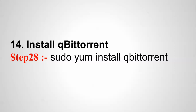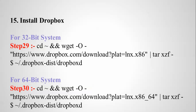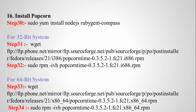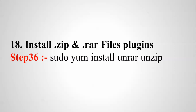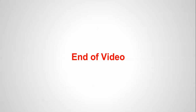To install qBittorrent, type 'qbittorrent' and it will be installed. To install Dropbox: for 32-bit use step 26 commands, for 64-bit use the 30-step command. For Popcorn Time, first install Node.js (step 30), then for 32-bit type steps 31 and 32, and for 64-bit type steps 33 and 34. To install Steam, type 'steam'. To install support for zip and rar files, type 'unrar' and 'unzip'.